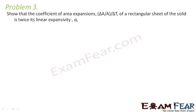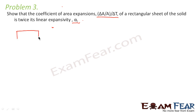Now let us look at problem 3: show that the coefficient of area expansion, delta A by A divided by delta T, of a rectangular sheet of solid is twice its linear expansivity, that is alpha L. We are talking of area expansion. Let us suppose we have a rectangular sheet — this length is X and this length is Y.